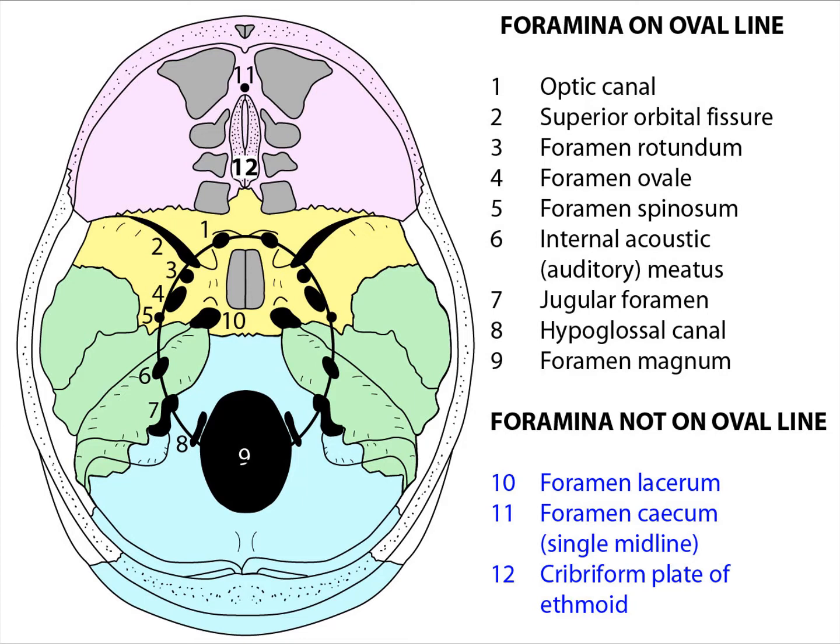Number two is the superior orbital fissure between the lesser and greater wings of the sphenoid. Through here we have cranial nerves three, four, six, and the ophthalmic division of the trigeminal nerve, and also leaving the orbit, the superior ophthalmic vein.